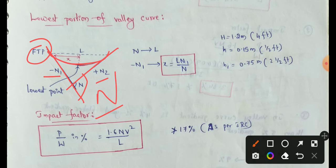Next, L means length of curve. X represents the lowest portion of the valley curve.